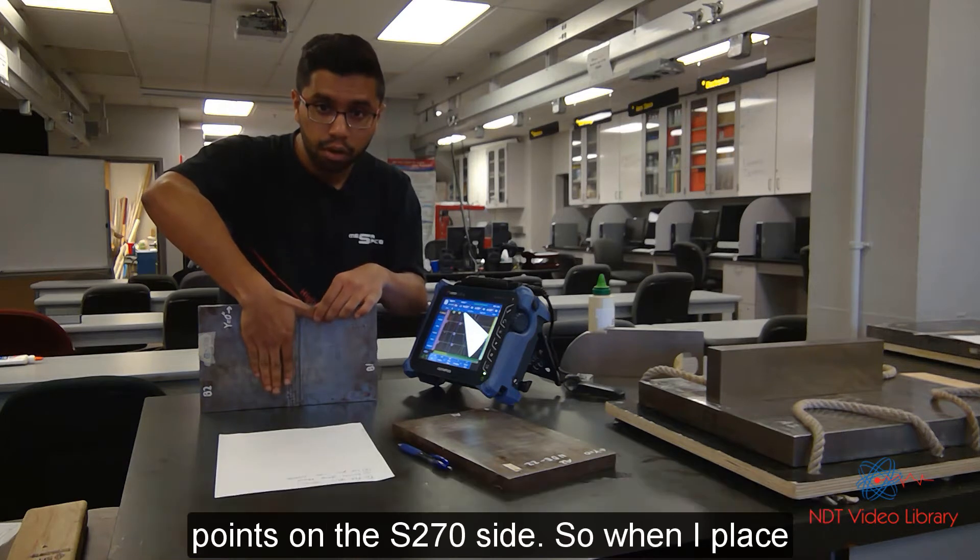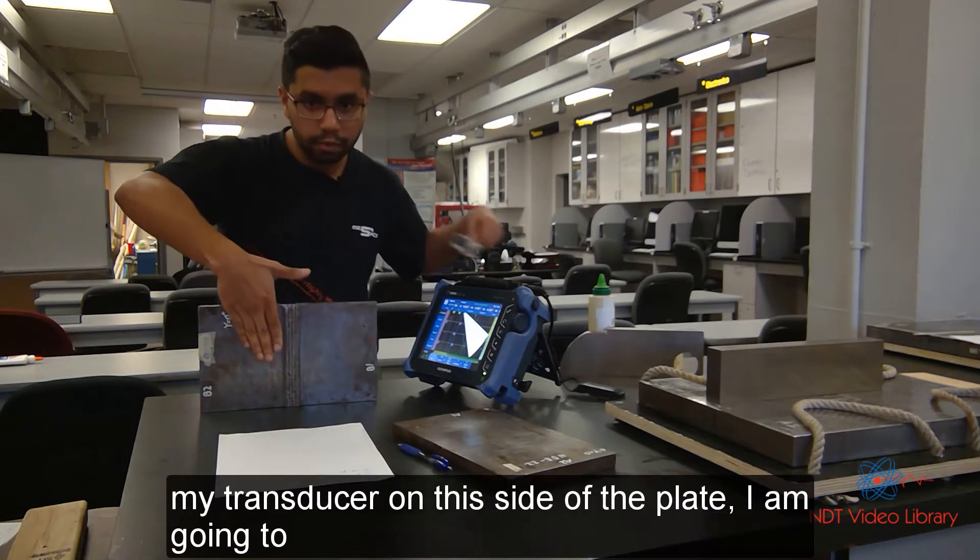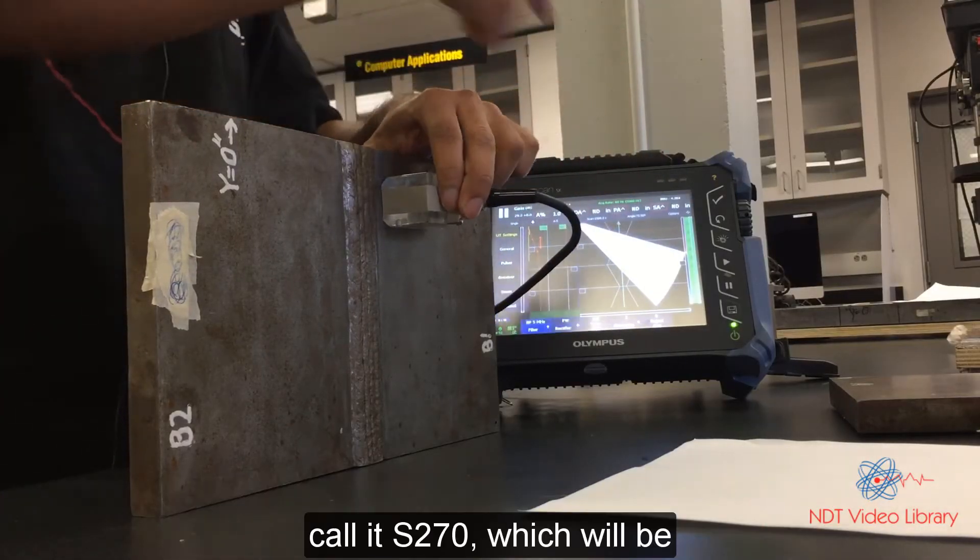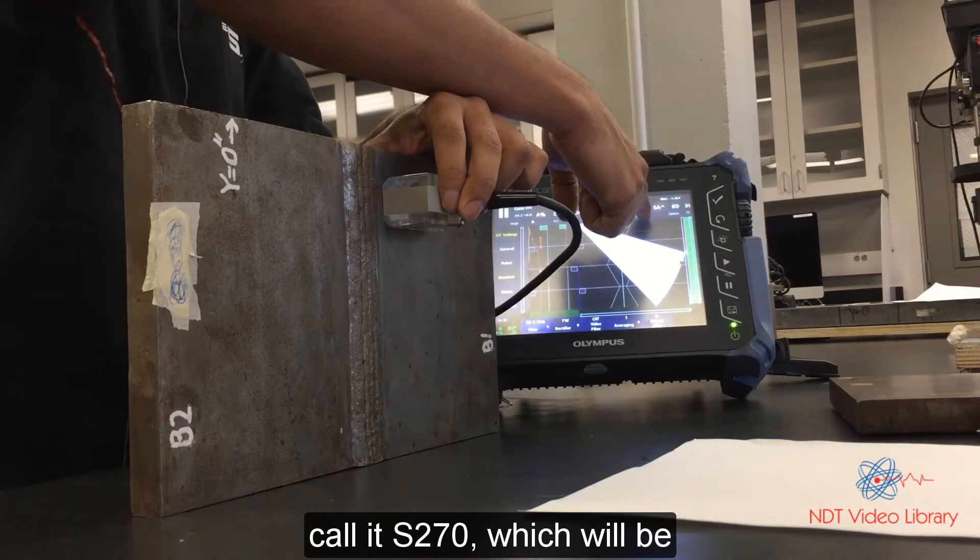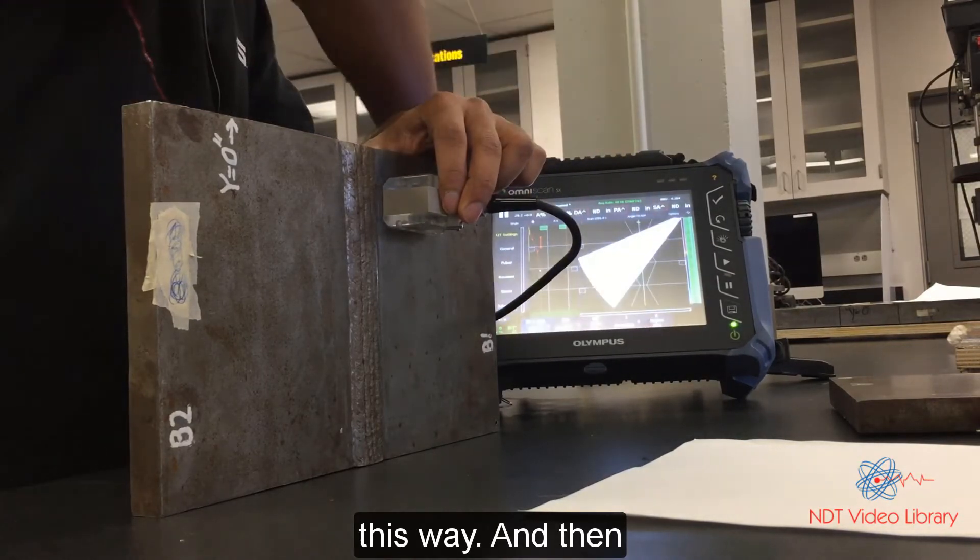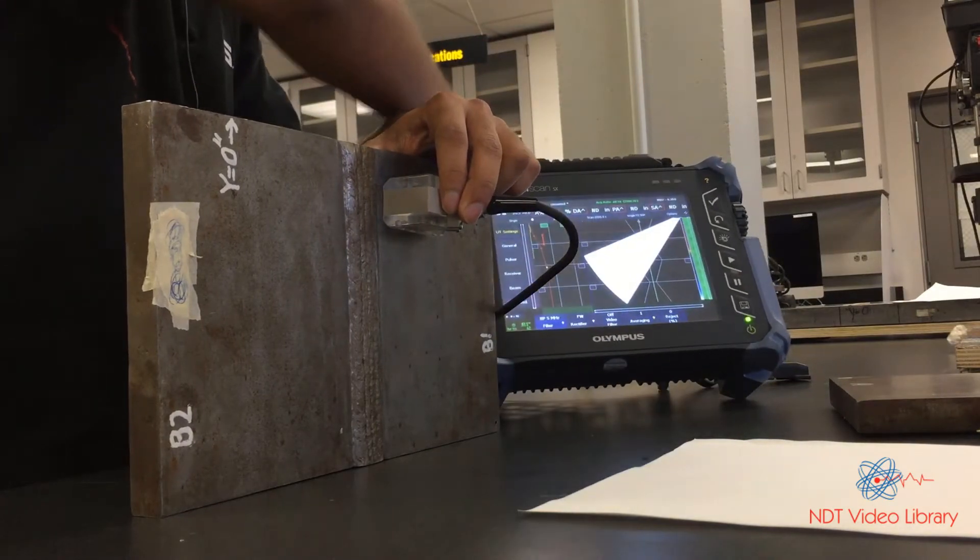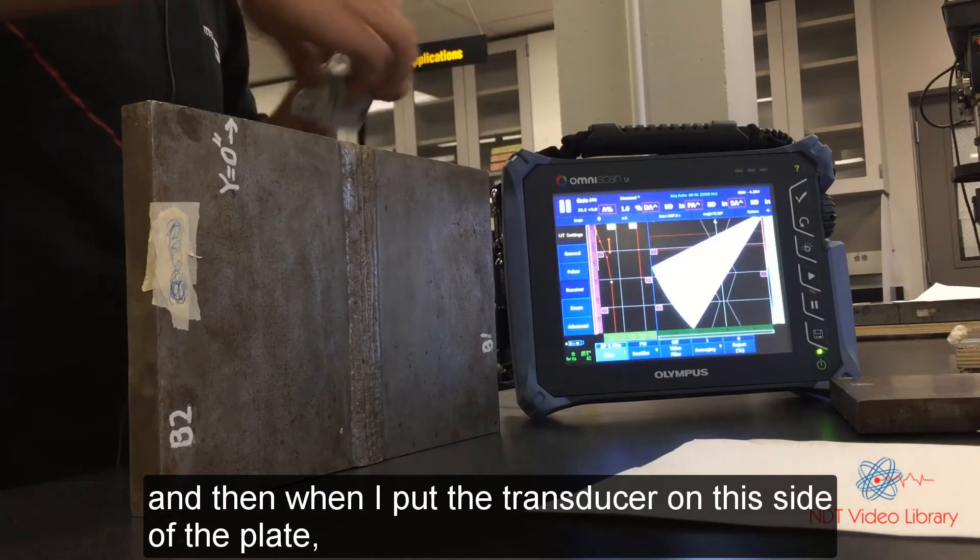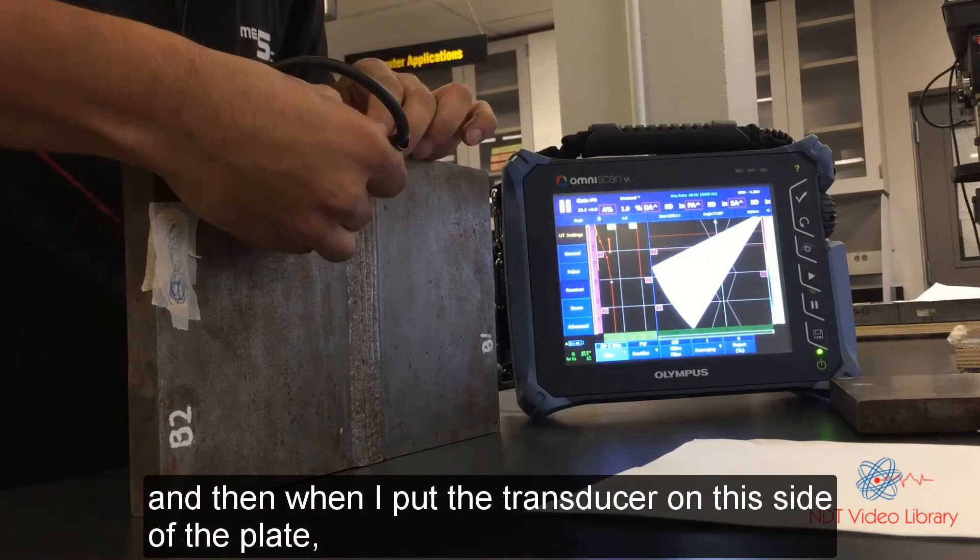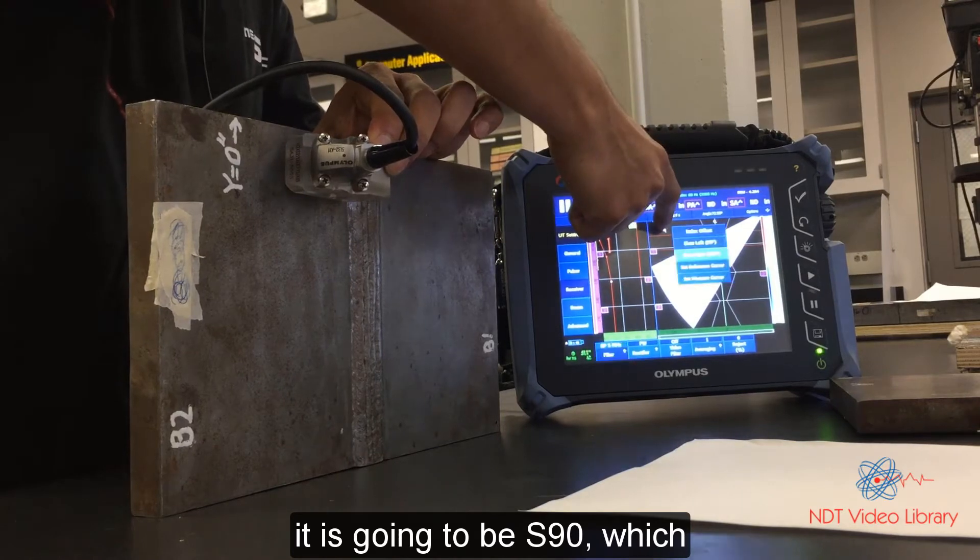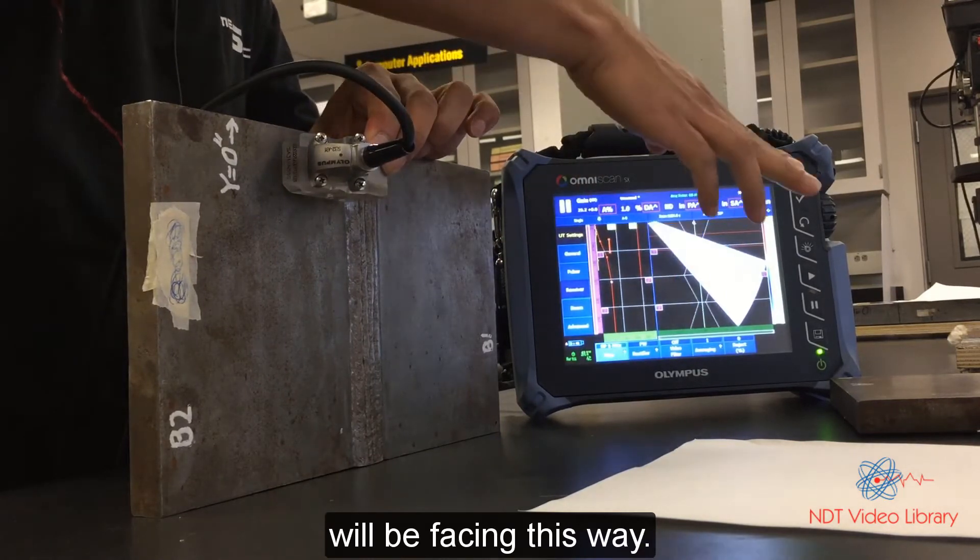Then the thumb points on the 270 side. So when I place my transducer on this side of the plate, I'm going to call it skew 270, which will be this way. And then when I put the transducer on this side of the plate, it's going to be skew 90, which will be facing this way.